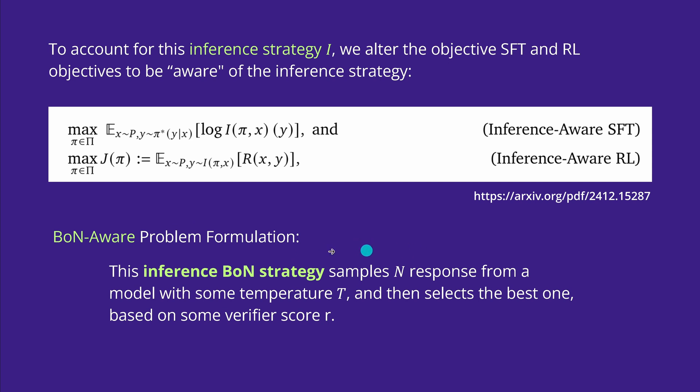This best of N problem formulation for the inference strategy is rather straightforward. It samples N responses from an LLM with some temperature T and then selects the best one based on some verifier score r.